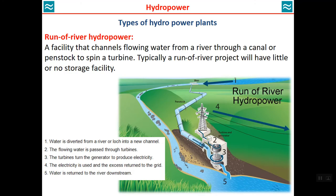The third type of hydropower plant is run-of-river hydropower. In this system, water is diverted from a river into a new channel, and the remaining setup is similar to a conventional hydropower plant. The main difference from the storage type is that there is no water storage reservoir.